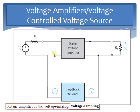The increased input resistance results from the difference Vf minus Vs, which produces a smaller input voltage Vi at the input of the basic amplifier. When the input voltage Vi is lower, it causes the input current to be smaller, and as a result Vs will increase.